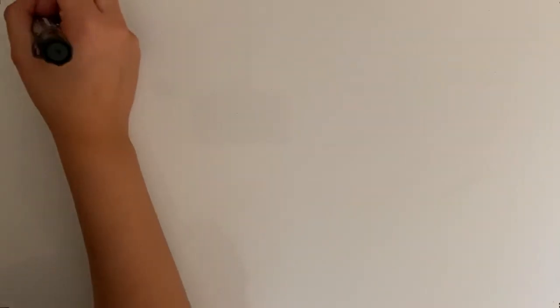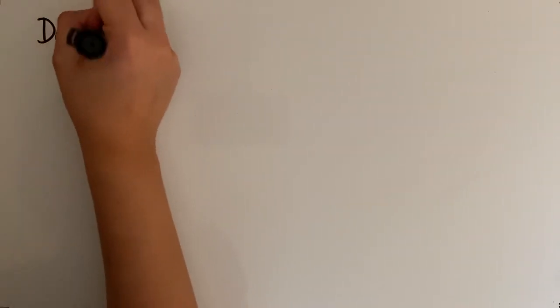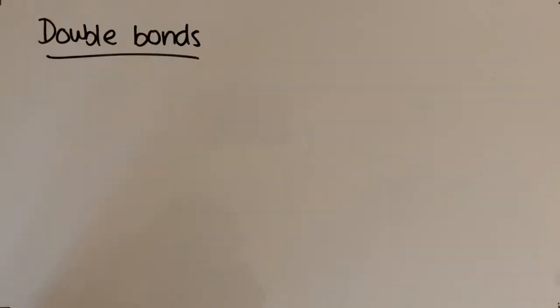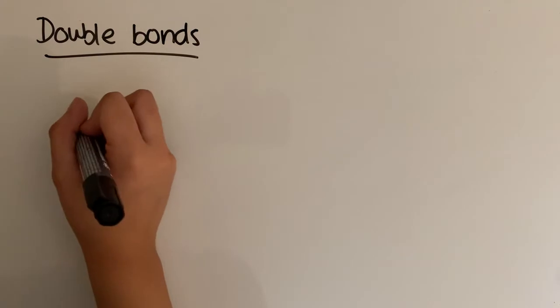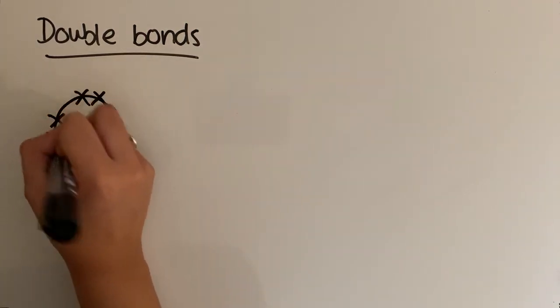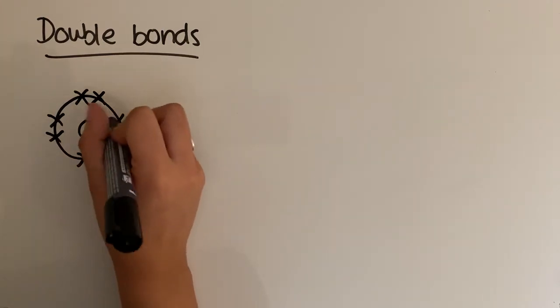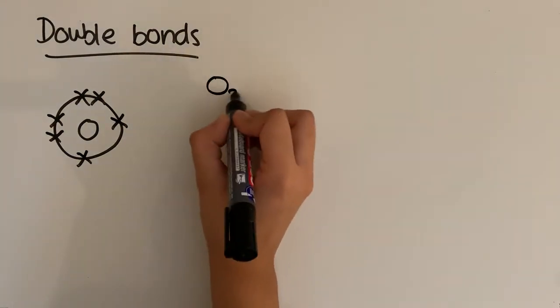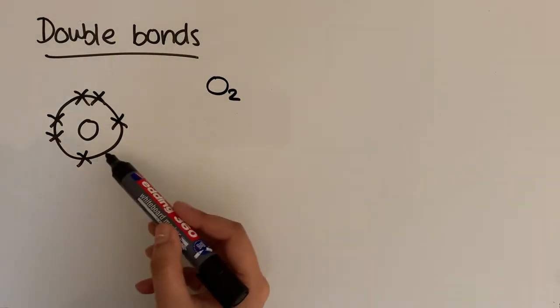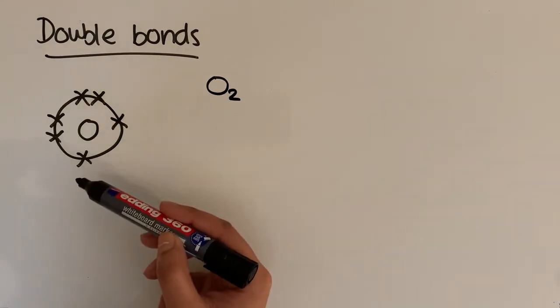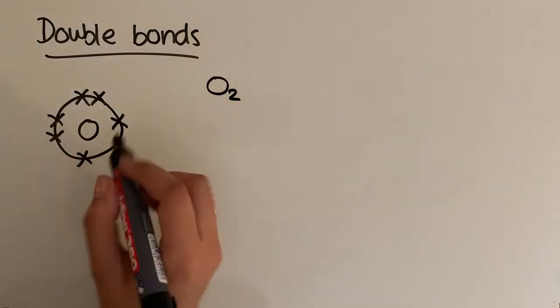Let's now have a look at where we have more than one covalent bond — that is, double bonds. The primary example is oxygen. Oxygen has six outer electrons, and when it bonds to another oxygen to form an O2 molecule, it needs to gain two electrons to make a full outer shell of eight, so it shares two of its electrons with the other oxygen.